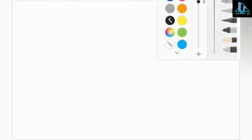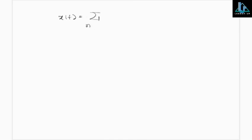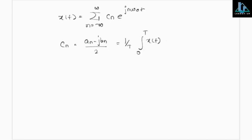The important formulas in this topic are: x(t) = summation from n=-∞ to ∞ of cₙe^(jnω₀t); cₙ = (aₙ - jbₙ)/2 = (1/T)∫₀ᵀ x(t)·e^(-jnω₀t)dt; and c₀ = a₀ = (1/T)∫₀ᵀ x(t)dt.